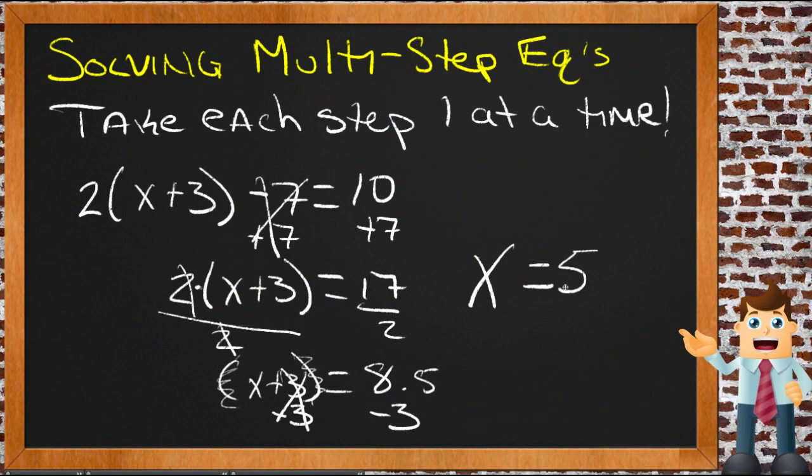So you can see a multi-step equation is just a number of one-step equations. Here's a step right here, here's a step right here, and here's a step right here. This one was just adding that seven, this one was just dividing by two, and this one was just subtracting three. Pretty simple steps. Altogether it looks a little complicated; broken down into pieces, no problem.